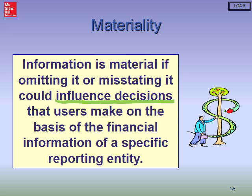We also need to consider qualitative factors. For example, a user might say they would not have bought that stock if they had known the financial statements were misstated by $25,000 — not $25 million — because of management fraud. Now it's the qualitative aspect that made it a material effect. So we consider both qualitative and quantitative factors in determining materiality. This allows us to focus our audit resources on items that are more important — we're not looking for two-cent errors, we're looking for material errors.